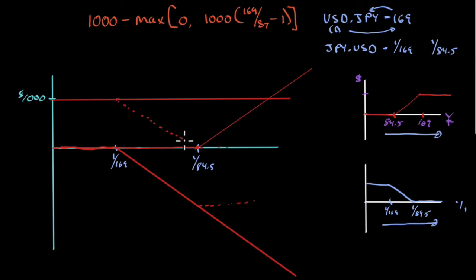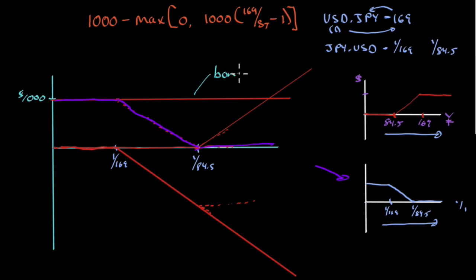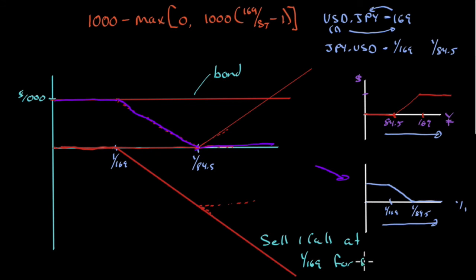From 1/169 to 1/84.5, the first instrument drags the combined payoff downward. But once we hit 1/84.5, a second instrument starts gaining and negates that loss — keeping the combined payoff flat at zero. The result: flat at $1,000 to the left of 1/169, sloping down between the two strikes, then flat at zero to the right of 1/84.5. That matches the ICON payoff exactly. The first instrument looks like I sold a call.